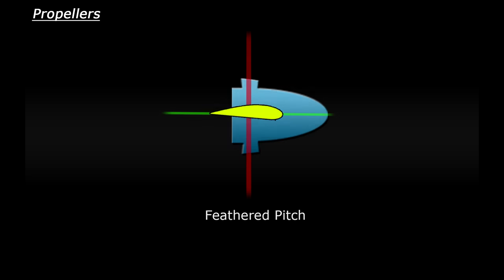There is one more setting that you might come across and that is a feathered pitch angle. This is basically when the blade is turned edge on into the airflow to provide very little wind resistance. This is mainly used if the engine fails because it reduces aerodynamic drag.